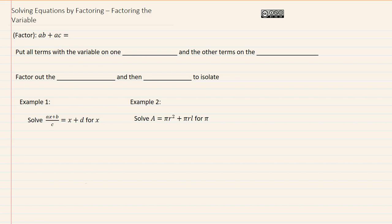Solving equations by factoring, factoring the variable. So if we were given ab plus ac, we would factor this by taking out the common factor of a, leaving us with b plus c inside the parentheses.